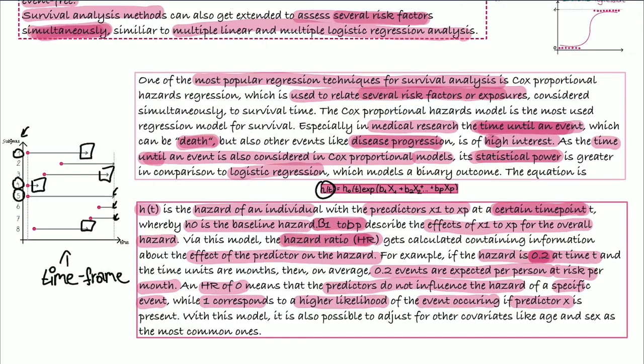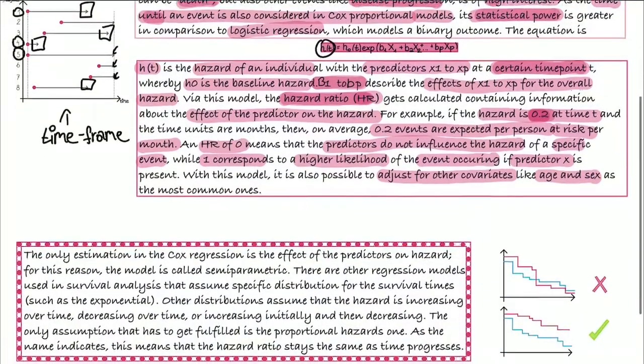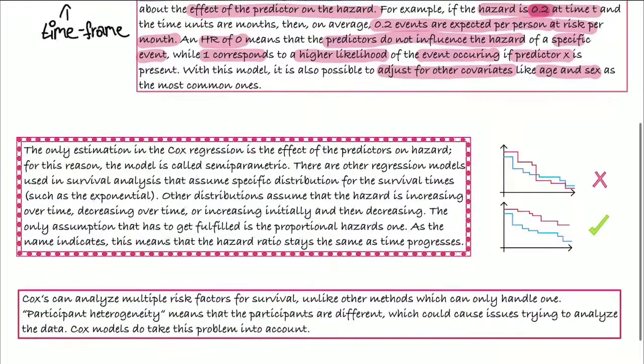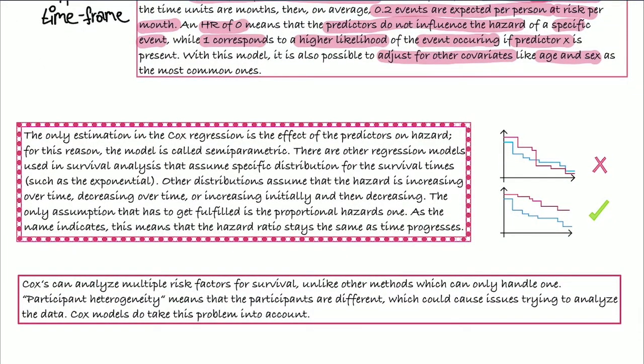And in this model, like with the other regression models, we can adjust for covariates like age and sex, which are the most common ones, but you can also adjust for BMI, cholesterol, whatever you want to analyze depending on your research question.